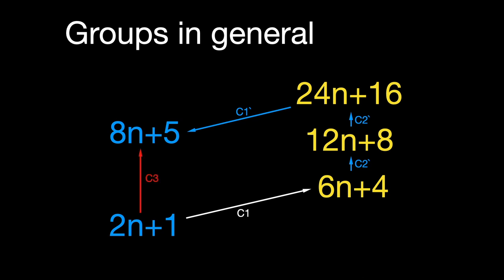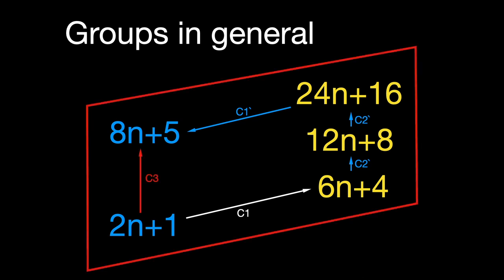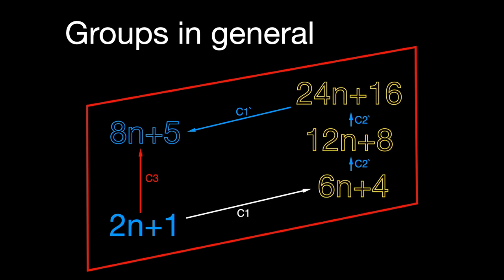So, we've created a valid Collatz path from 8n plus 5 to 24n plus 16 to 12n plus 8 to 6n plus 4, where it's joined by the path from 2n plus 1.